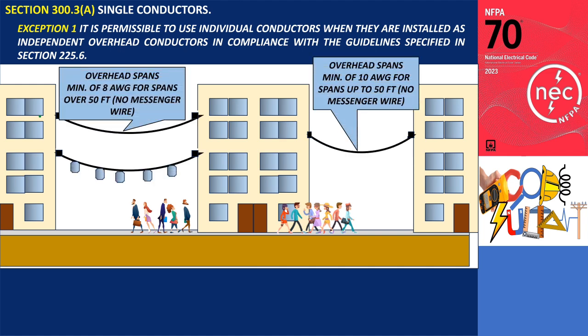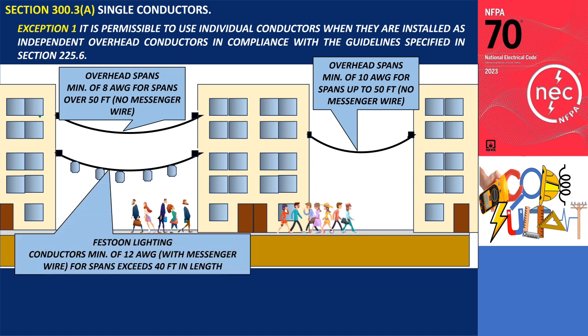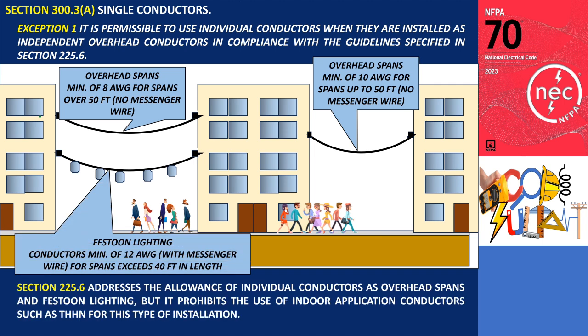Section 225.6 addresses the allowance of individual conductors as overhead spans and festoon lighting, but it prohibits the use of indoor application conductors such as THHN for this type of installation.